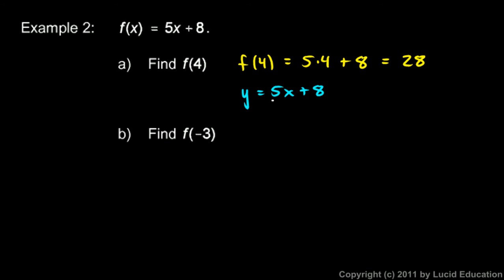And then b down here, find f of negative 3. We're going to take negative 3 and put it in for x right there. So f of negative 3 would be this expression with a negative 3 plugged in for x, so it's 5 times negative 3 plus 8. And what is that? Negative 15 plus 8, that would be negative 7.